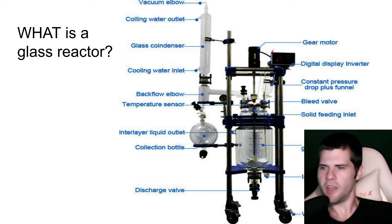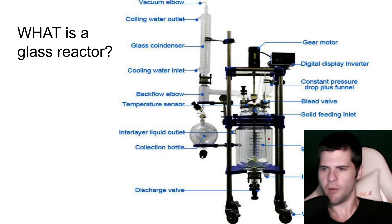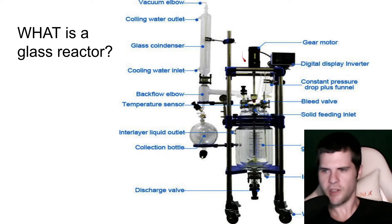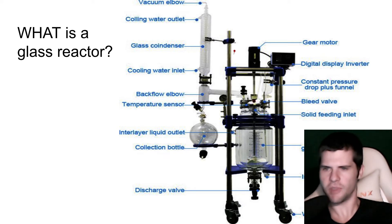Right here is what we will have — it's a digital display inverter, so this is going to tell us our stir speed, our vacuum pressure, and our temperature from the thermometer. It will all be reading right here on the back of this display module. This right here is what we call an overhead stir motor or a gear motor. It's connected to a PTFE stir rod, which will actually allow us to homogenize the reaction inside.